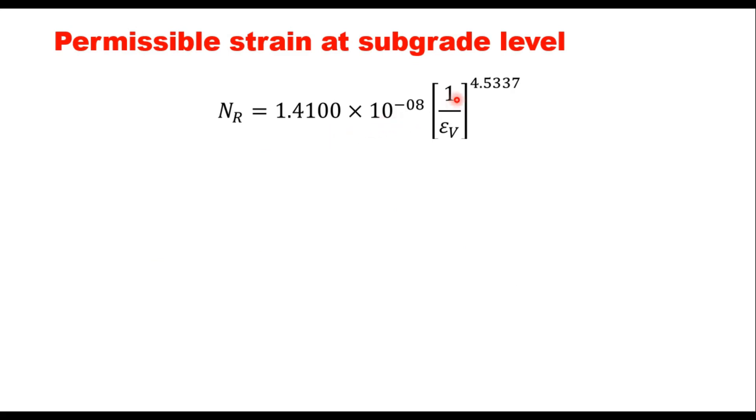This is the equation for rutting failure for 90 percent reliability. And because our traffic is 130 MSA, so we will consider this equation corresponding to 90 percent reliability. Nr here is 10,000, and corresponding to 10,000, this epsilon z will be 0.002433 meter or 2433 microns. Now this is the limiting strain at the top of subgrade.